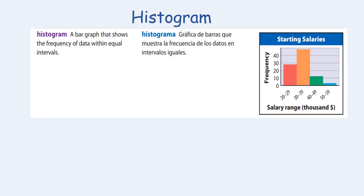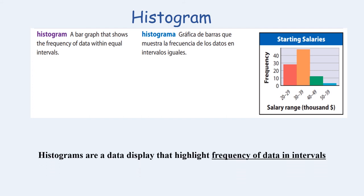So if you look at the image presented on the right about starting salaries you'll notice that it does look like a bar graph and it talks about frequency. However the axis at the bottom instead of a single digit or a category is an interval of numbers. So histograms like dot plots are a data display that highlight frequency of data in intervals.